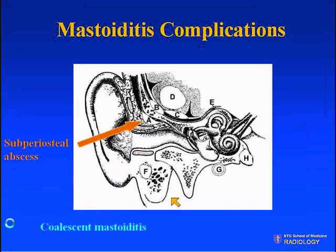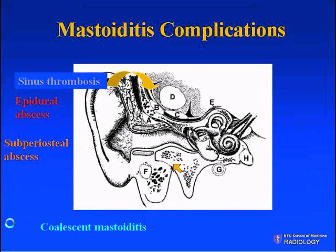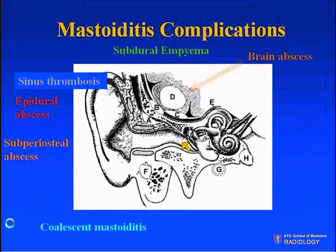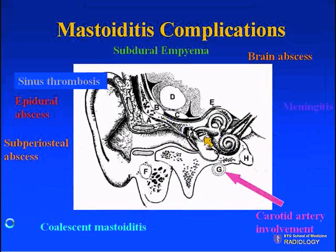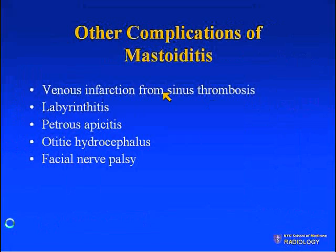Complications of coalescent mastoiditis include subperiosteal abscess, epidural abscess, sinus thrombosis, subdural empyema, brain abscess, meningitis, and carotid artery involvement. Additional complications include venous infarction from sinus thrombosis, labyrinthitis, petrous apicitis, otitic hydrocephalus, and facial nerve palsy. There is a wide spectrum of complications from mastoiditis that we really have to be aware of.